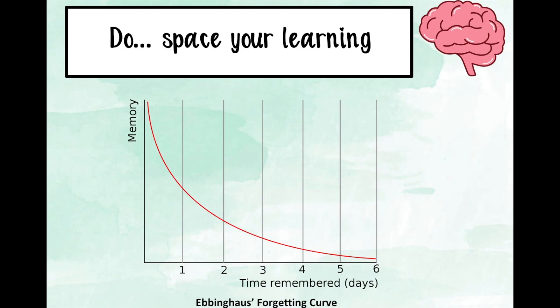A really effective way to apply this: say you had an hour revision session at school on Of Mice and Men. If you then came home that evening and for just 10 minutes went over the same notes, you are already hacking your brain to store more information than if you'd left it for a week. The ideal approach is to leave small amounts of time between reviews and gradually increase the gap — day one revision, then half a day later review for 10 minutes, then leave a day, then two days. Doing little but often is far more effective than long cramming sessions of six hours at a time.